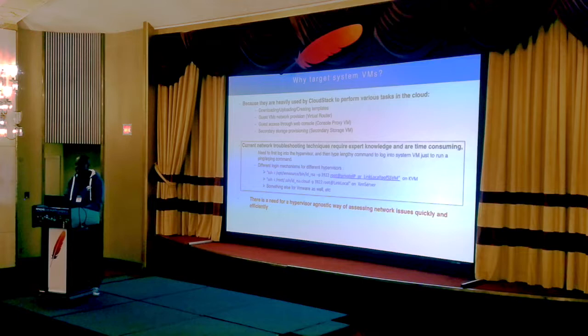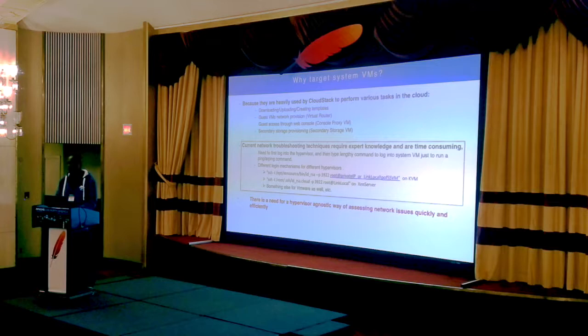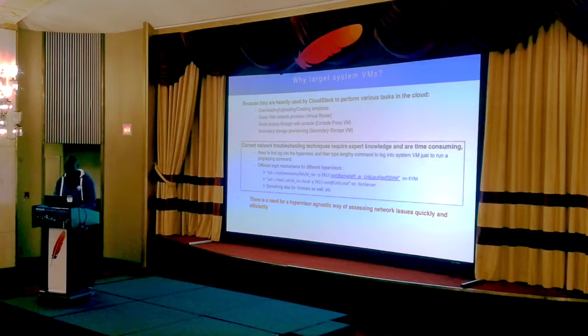One might ask: why are we targeting system VMs? Because system VMs are very important in CloudStack. We use them for performing a lot of operations within the cloud — for downloading, uploading, or creating templates. We also need the virtual router for provisioning network utilities within the cloud, and we need them for providing secondary storage capabilities.